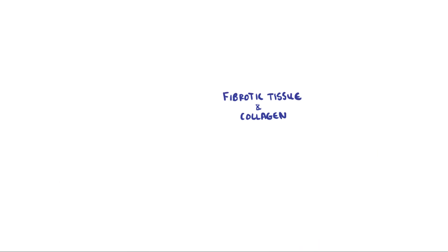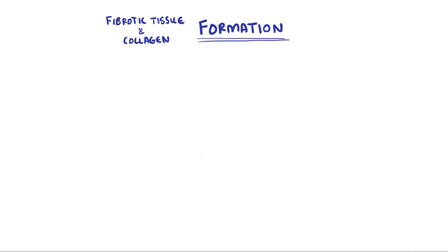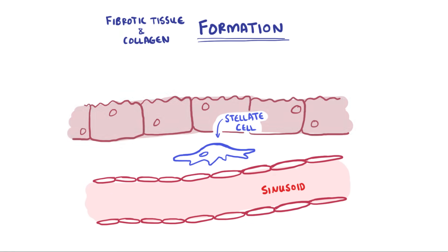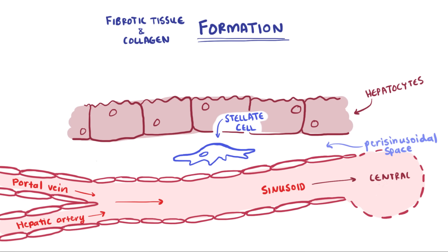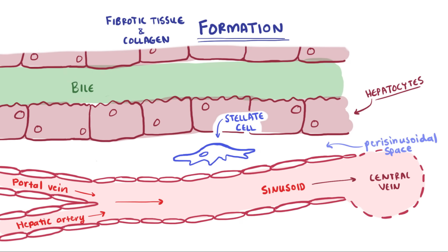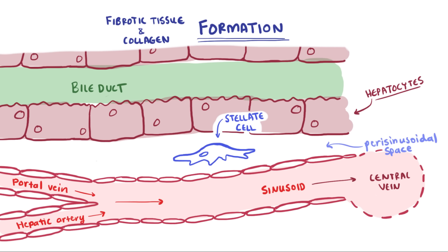Fibrosis is a process mediated by special cells called stellate cells that sit between the sinusoid and hepatocyte, in what's known as the parasinusoidal space. Here's a basic layout of the functional unit of the liver: the portal vein and the hepatic artery combine into a sinusoid, which then goes into the central vein, and these are all lined with hepatocytes. Along these, you've also got a bile duct, and all three constitute a portal triad. The parasinusoidal space — literally meaning around the sinusoidal space — is where stellate cells are located.